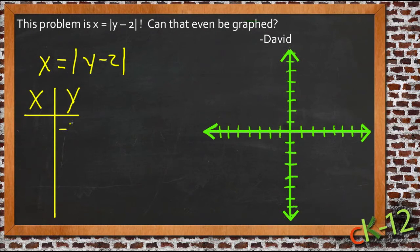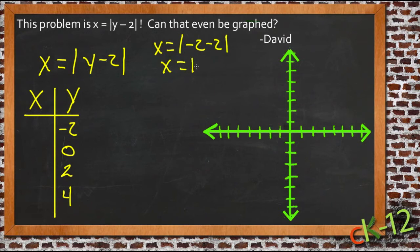So let's choose, let's say negative 2, 0, 2, and 4 for y. So if y is negative 2, then we get x equals the absolute value of negative 2 minus 2, which gives us the absolute value of negative 4, which is 4. So if y is negative 2, x is 4.